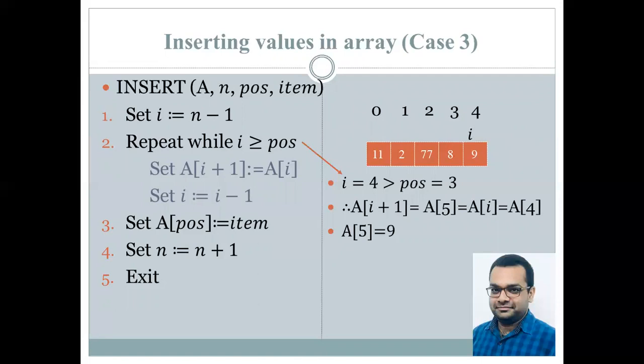And A of i is 4. So therefore, A5 gets the value of A4. And therefore, A5 becomes 9. And the value of i is decremented.